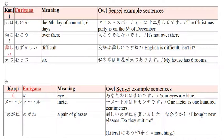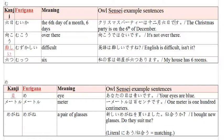So for mu, the first vocabulary is muika. Muika is the sixth day of a month, or six days. Because it's nearly December and that would be Christmas, I made this example sentence: Kurisumasu paati wa juunigatsu muika desu. The Christmas party is on the 6th of December. So juunigatsu for the 12th month, December, and muika for the 6th day - 12th month, 6th day, 6th of December.